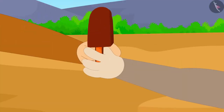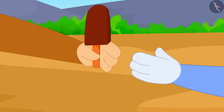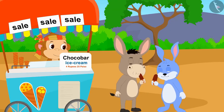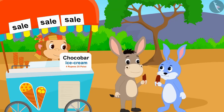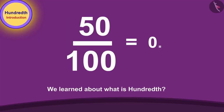Bunny and Bhola bought one Chocobar ice cream each from Babban and happily returned home eating ice cream. Children, in this video we learned about what is hundredth. In the next video, we will learn more about it through some interesting examples.